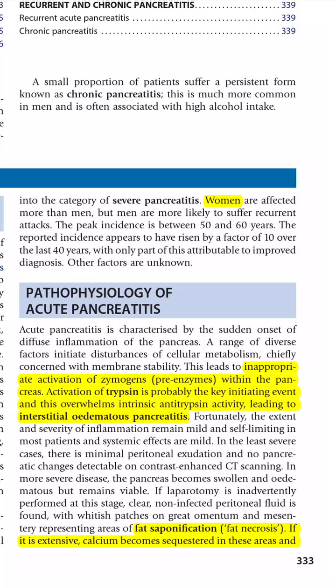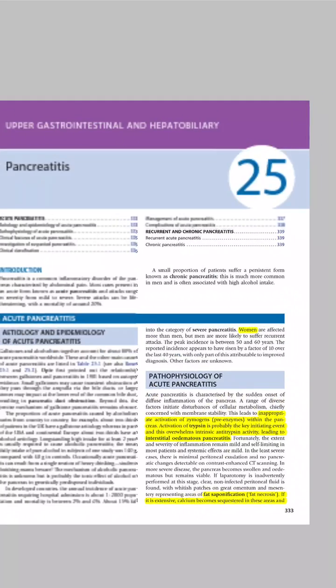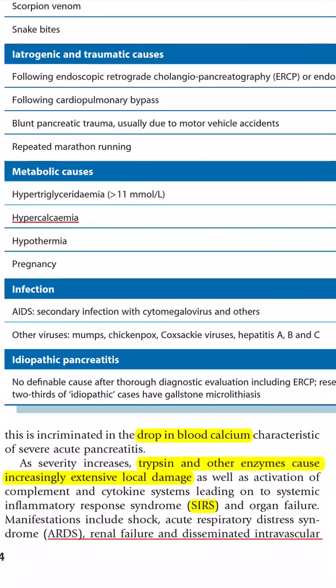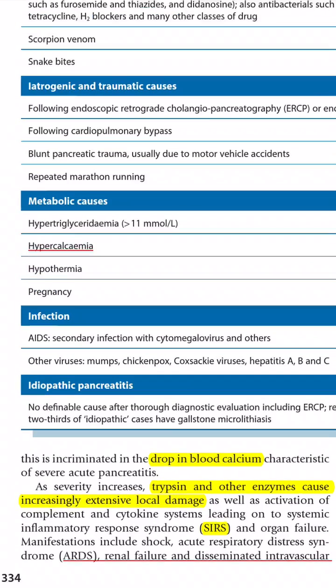Pathophysiology: there is inappropriate activation of zymogens — pre-enzymes — within the pancreas. Activation of trypsin is the key initiating event, leading to interstitial edematous pancreatitis. Fat saponification, which is fat necrosis, causes calcium to become sequestered in that area, leading to hypocalcemia. Hypercalcemia can cause pancreatitis, but pancreatitis itself can cause hypocalcemia through this fat saponification mechanism. Trypsin and other enzymes cause local damage which can progress to ARDS, renal failure, or DIC.